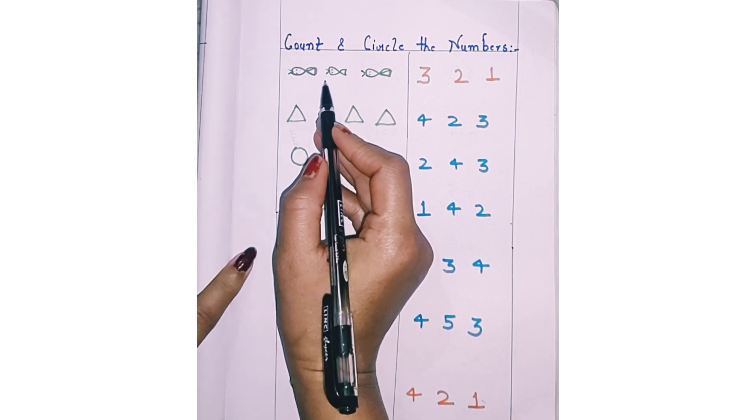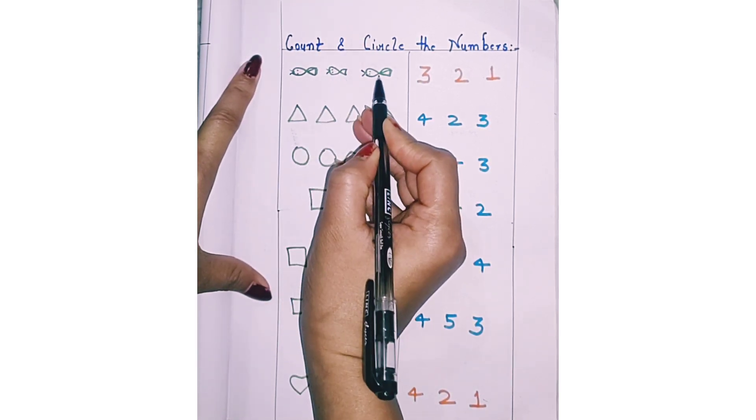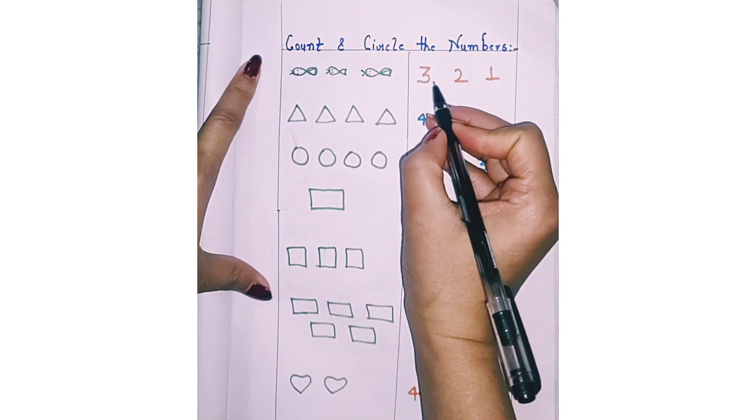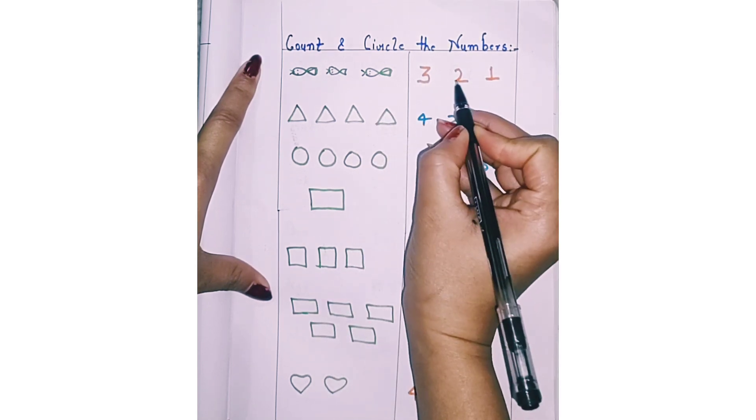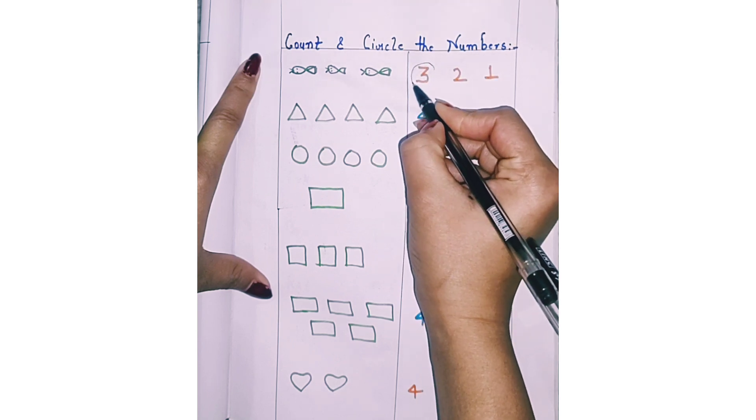Let's start. How many figures are there? Count with me. 1, 2, 3. See here. 3, 2, 1. Circle 3.